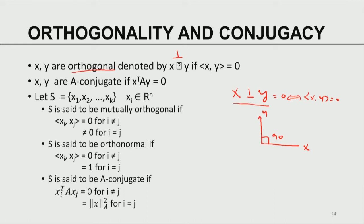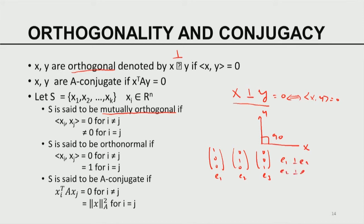An extension of orthogonality is conjugacy: two vectors are said to be A-conjugate if x transpose A y equals 0. A set of k vectors is mutually orthogonal if for any two vectors xi and xj, their inner product is 0 when i is not equal to j. For example, the standard unit vectors e1=(1,0,0), e2=(0,1,0), e3=(0,0,1) are mutually orthogonal: e1 is perpendicular to e2, e2 to e3, and e3 to e1.